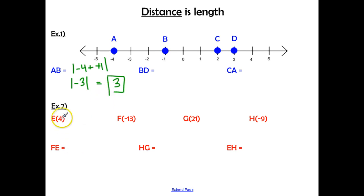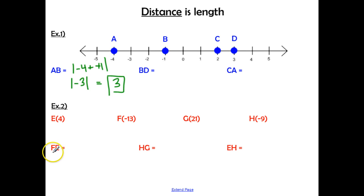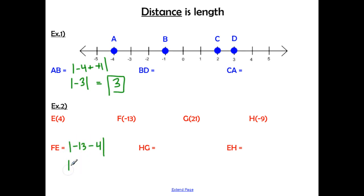In the second set of examples, instead of a number line, we're given coordinate points for each variable. To find FE, we take the absolute value of coordinate F minus coordinate E. Negative 13 minus 4 gives us negative 17. How far away is negative 17 from zero? That's going to be 17 as our final answer.